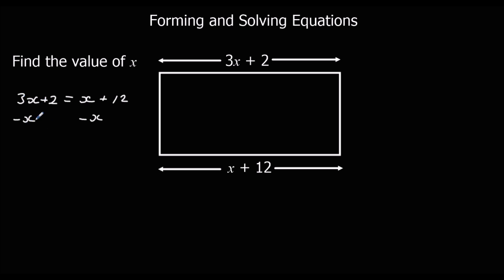3x take away 1x is 2x, still got 2 there. x minus x is nothing, and I've got 12 there. I want to get x by itself, so I'm going to get rid of this 2.